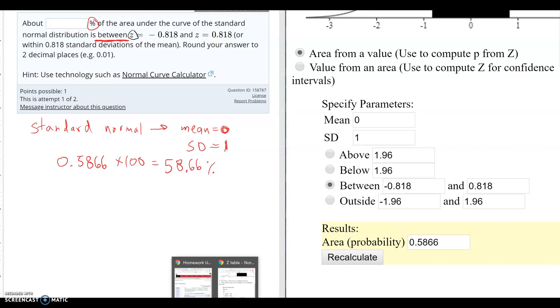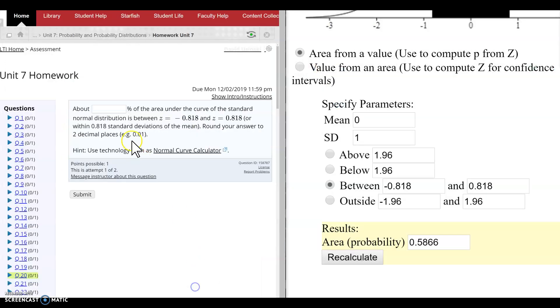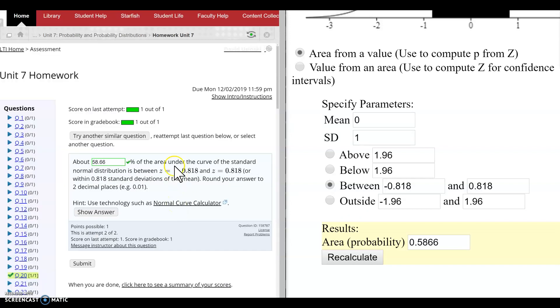So let's go over to my homework here and type this in. So I get 58.66. And let's do the submission. 58.66. And it works.